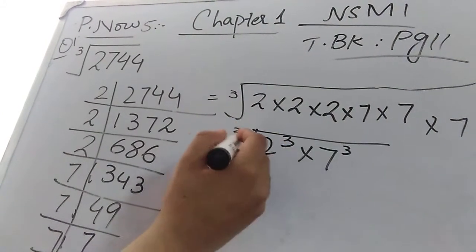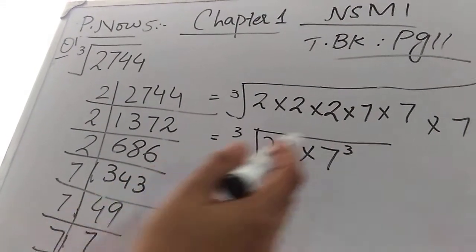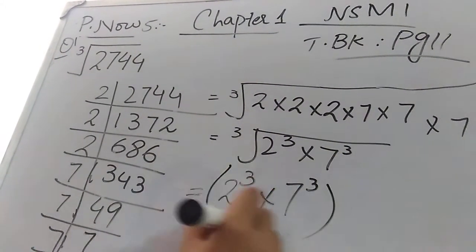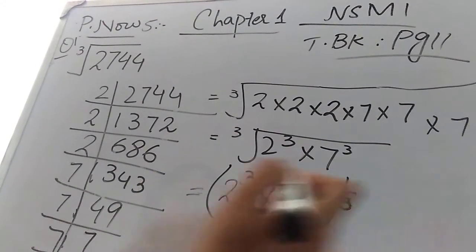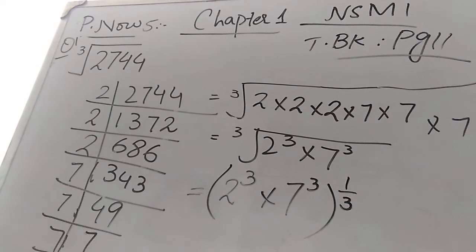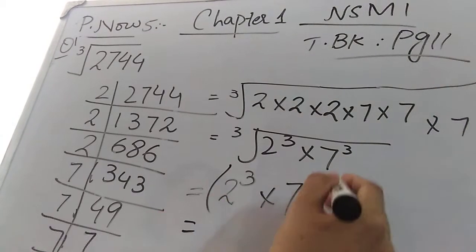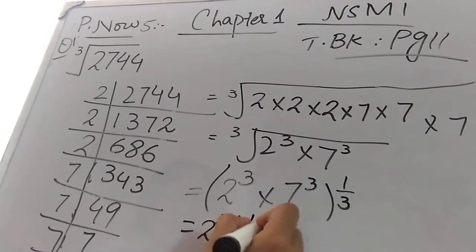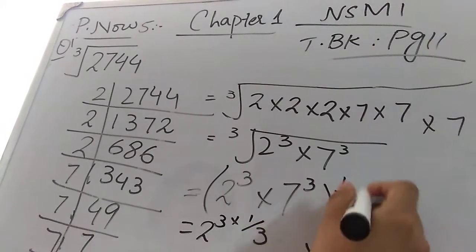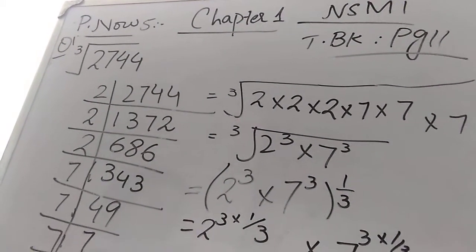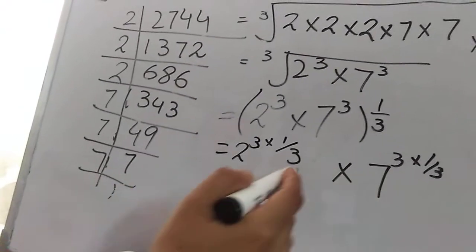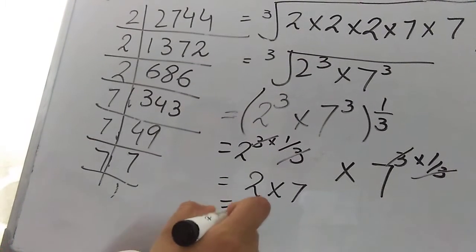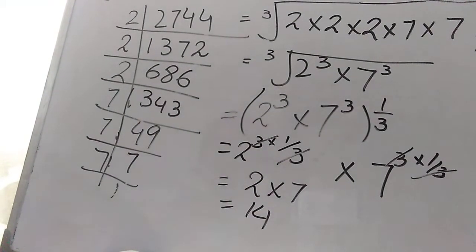The cube root symbol means the power 1/3, just as the square root means 1/2. So I can write 2 power 3 × 7 power 3, and instead of the cube root symbol, I write the power 1/3. This 1/3 multiplies with both numbers inside. So 2 power (3 × 1/3) and 7 power (3 × 1/3) — the 3s cancel, leaving 2 and 7. So 2 × 7 = 14, and that is your answer.